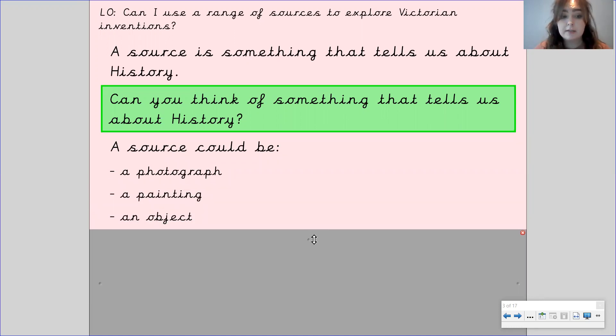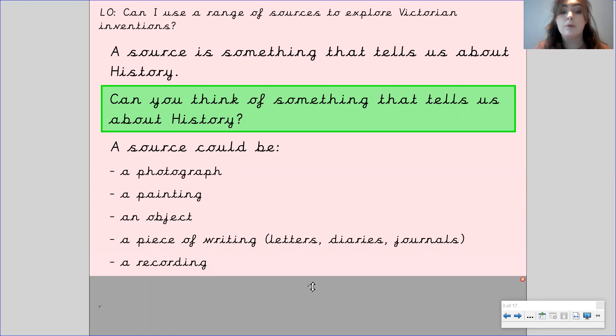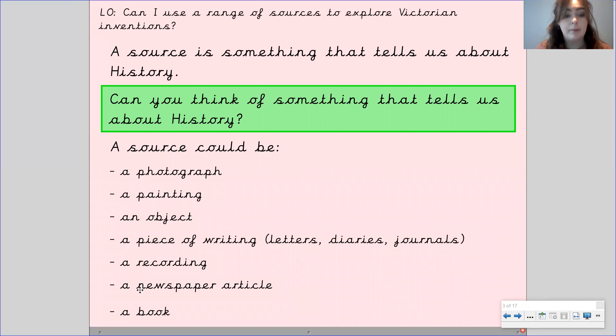It could be an object, it could be a piece of writing such as letters, diaries or journals, it could be a recording whether it's a voice recording or a video recording, it could be a newspaper article or it could be a book. So these are some examples of some sources that we have in history. Now all of these do a great job in telling us what things were like in the past.